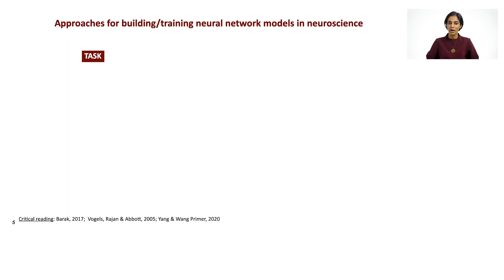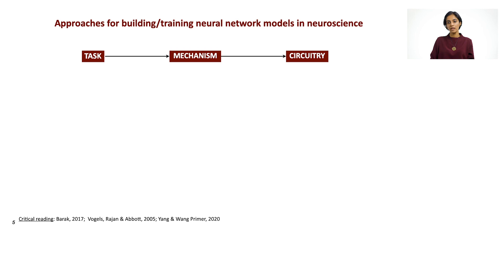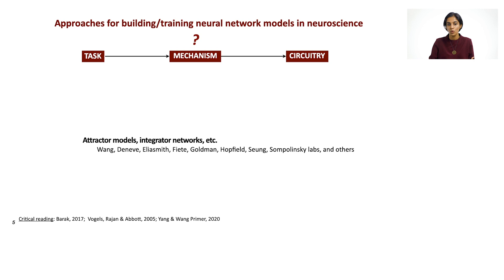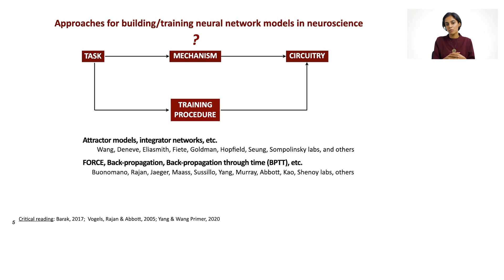What are a few approaches for building and training neural network models in neuroscience? One way would be to imagine how a certain task is to be performed, imagine the mechanism, and then dial that up into the circuitry — a normative way of constructing these models. However, these have been restricted to a few specific kinds of tasks. When starting to think about more naturalistic behaviors or richer experiments, it's harder to conceive of a mechanism a priori. What we can do is leverage the explosive advances in machine learning by training recurrent neural network models to do those tasks.